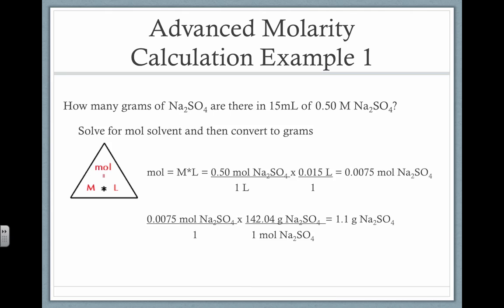So, let's say I wanted to know how many grams of Na2SO4 there are in 15 milliliters of a 0.5 molar solution. Well, what we would do is we would solve for moles of solvent first. And then we could convert that into grams, right? So, if we use our molarity triangle, we know that the moles is going to be the molarity times the volume. So, we have our 0.5 molar solution. Now, instead of a capital M, I broke it down into moles over liters just to show you how the dimensional analysis works. We multiply it times the volume, which I convert to liters so that the units match up. And we end up with 0.0075 moles of sodium sulfate.